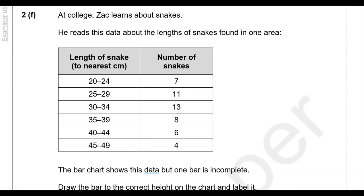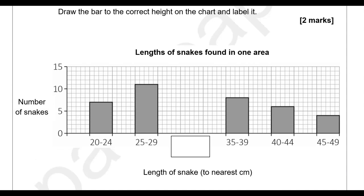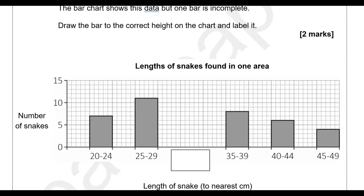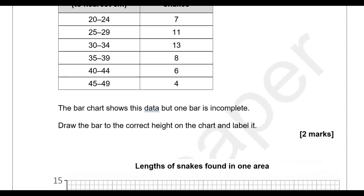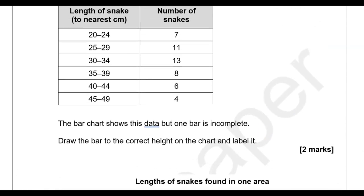At college Zach learns about snakes and reads data about the length of snakes found in one area. The bar chart shows this data but one bar is incomplete — draw the bar to the correct height and label it. The incomplete bar is for the length between 30 and 34 cm, and that represents 13 snakes.